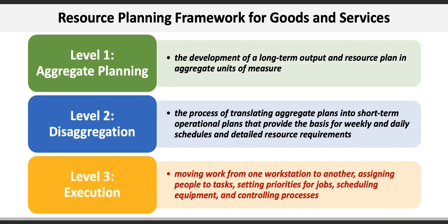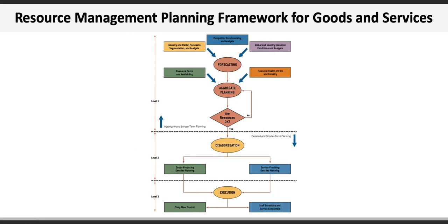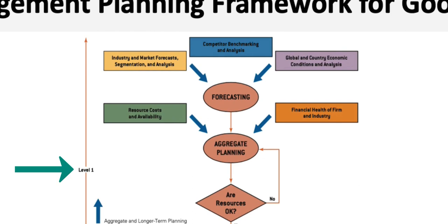Here's a visual representation of the resource management planning framework for goods and services taken from your textbook. Level 1 includes consolidating various industry, market, competitor, and economic analysis into forecasts that become the basis for the aggregate plan, which considers resource costs and availability, as well as the financial health of the firm and the industry. We don't proceed to the next level until we confirm we have the right resources in place, and may have to go through successive iterations of aggregate planning to get it right.